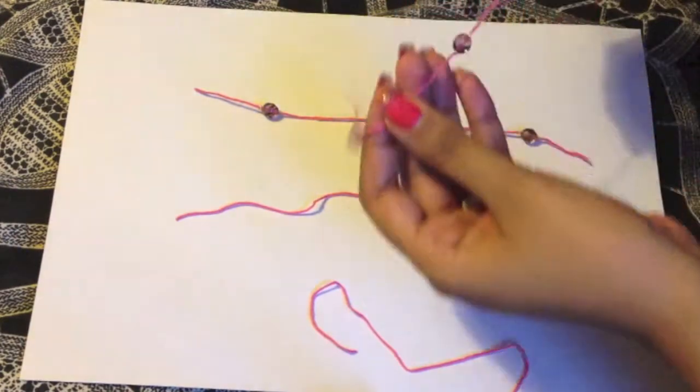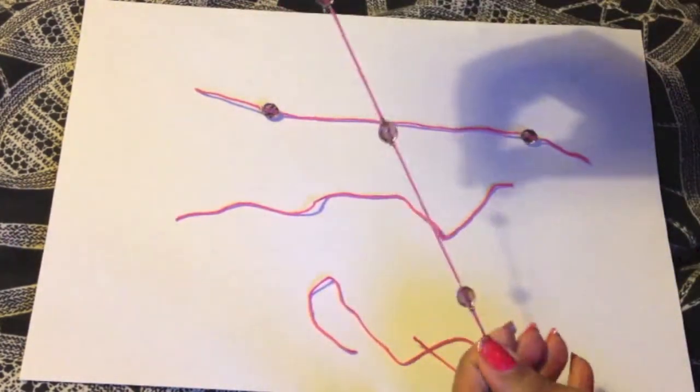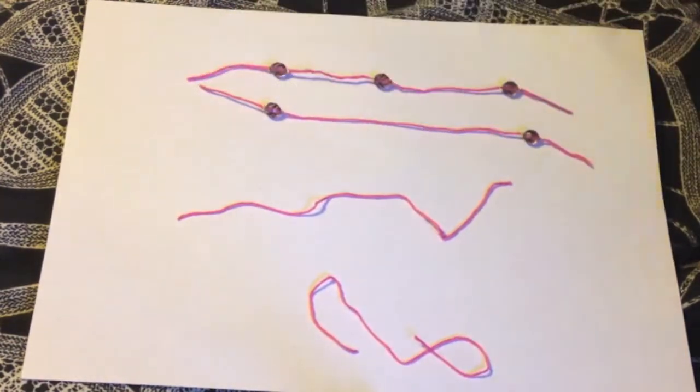Here I've already added some crimp beads and some glass beads into the thread. You will need to do two of number ones and two of number twos.